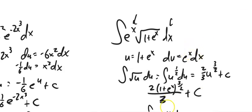Now I can plug it back in: I basically have 2 times (1 plus e to the x) to the 3/2, and the whole thing is over 3, plus a constant. You can also write it as 2/3 times that.